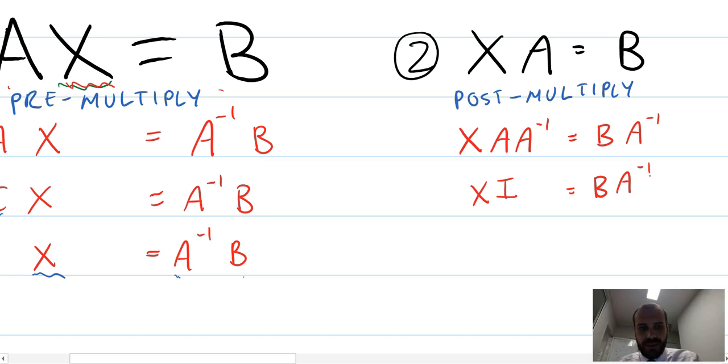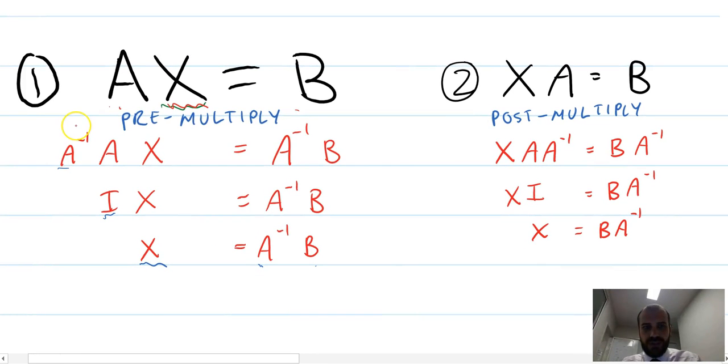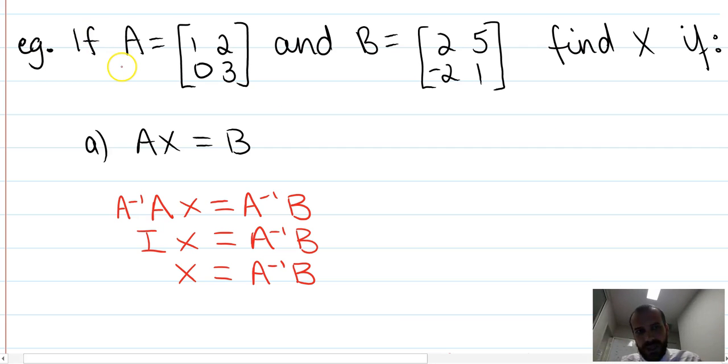So it's important to note that the answers are going to be different. In this one, x is equal to the inverse times b, and in this one, x is equal to b times the inverse, and those two answers are going to be different. But the procedure is essentially the same. You just need to remember this whole pre-multiply thing, post-multiply thing. Here's a more concrete example.